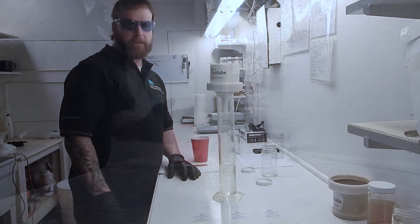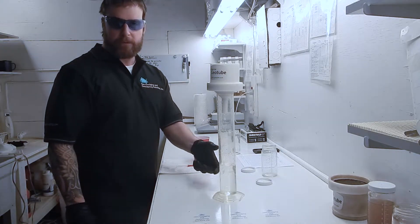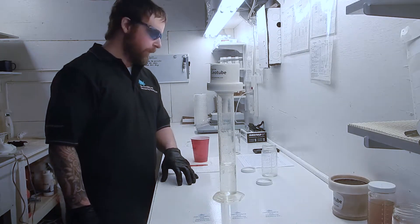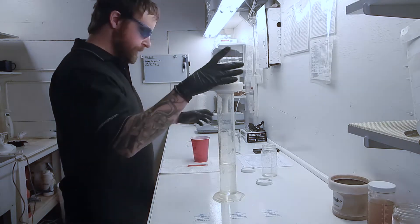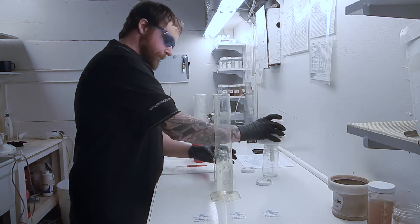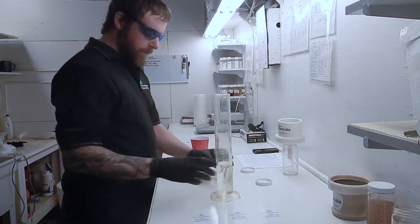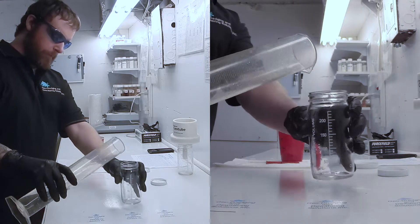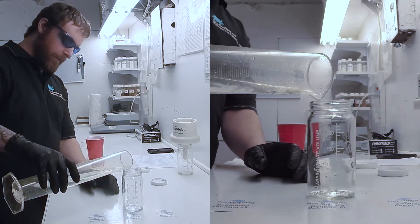Once you've timed out for a minute, you'll then take the amount of effluent you've collected in the graduated cylinder and record that number. We'll then take our effluent and pour it into a clean graduated jar.